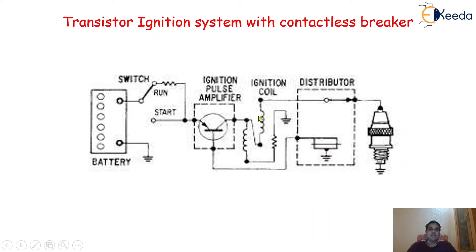From the transistor it is connected to the windings — one is the primary winding and another is the secondary winding — which together form the ignition coil. From the secondary winding it is connected to the distributor, and through the distributor it is connected to the spark plug. This is an example of a single cylinder engine, which is why only a single spark plug is present.